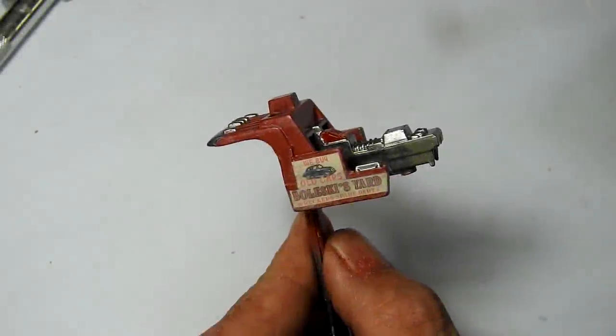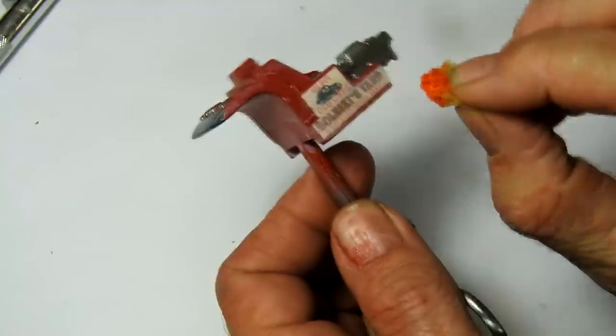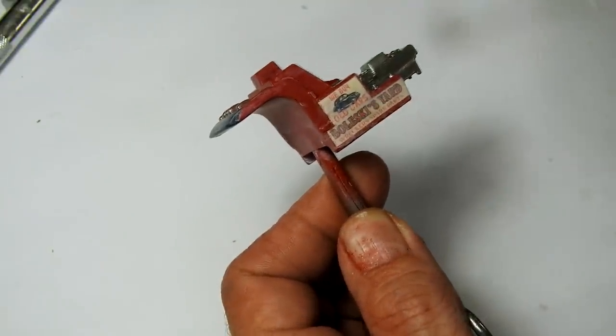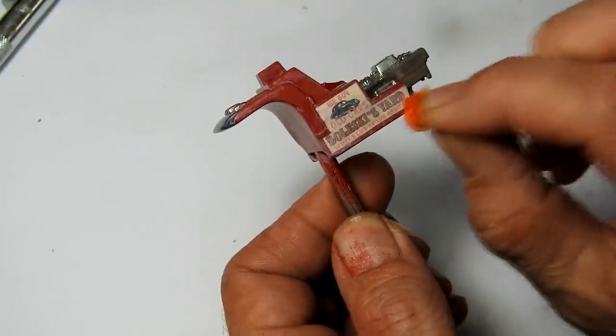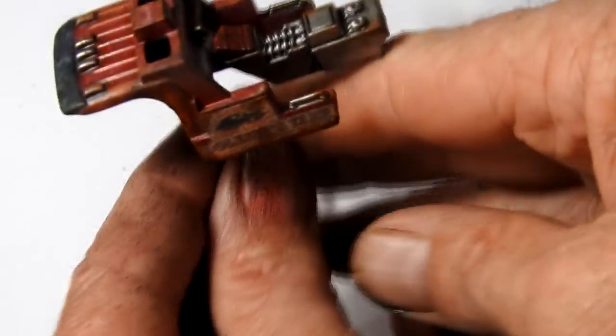And again with the rear section I applied rust in the same method. And then I followed that again with the dark wash.